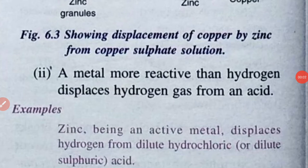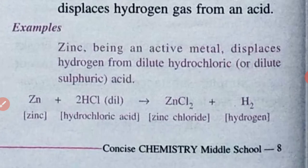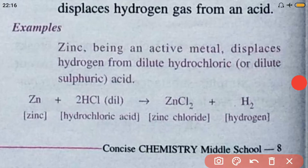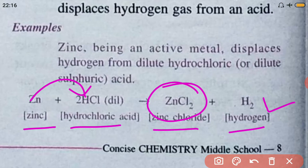Next example: a metal more reactive than hydrogen displaces hydrogen gas from an acid. Zinc, being an active metal above hydrogen in the list, displaces hydrogen from dilute hydrochloric acid or dilute sulfuric acid. In the equation, zinc reacts with HCl to form zinc chloride ZnCl₂ and hydrogen gas — hydrogen is displaced as zinc takes its place.